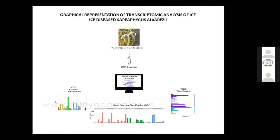Next we go into the transcriptomics studies. This is a graphical representation of transcriptomics of ice-ice disease in Kappaphycus alvarezii. From the ice-ice disease sample — which you can see appears white — RNA extraction was done. RNA extraction was very difficult because RNA is not a stable molecule, unlike DNA. We had to send samples outside for sequencing, as we don't have facilities for the large-scale sequencing required.